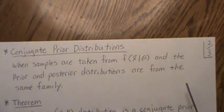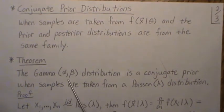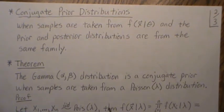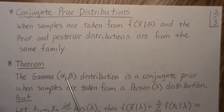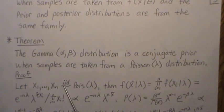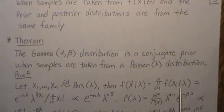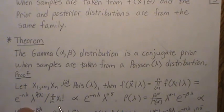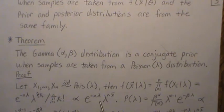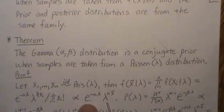Theorem one: the gamma distribution is a conjugate prior when samples are taken from a Poisson distribution. That means the prior and the posterior are both from a gamma distribution. Let's show that. Let our data be IID Poisson. The likelihood function is just a product of the marginals. In Bayesian analysis we often drop the constants because we're interested in lambda, so the X's are considered constant, giving us something proportional to the key terms involving lambda.